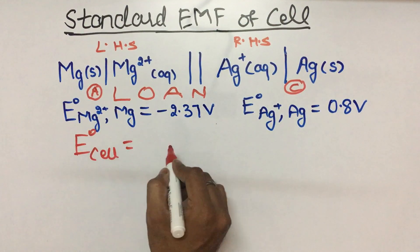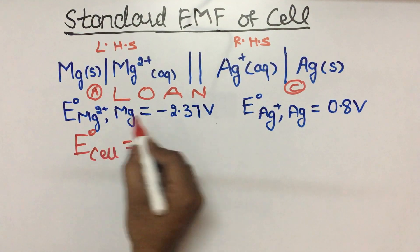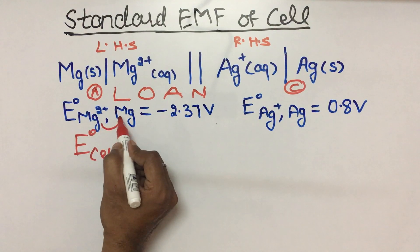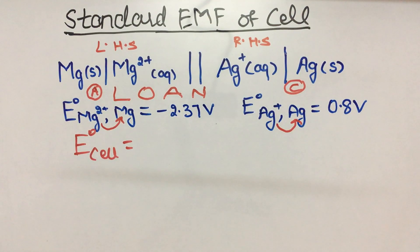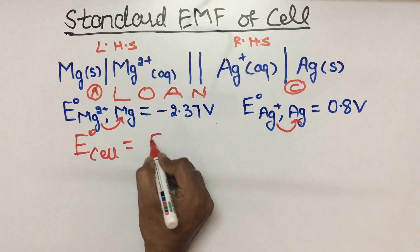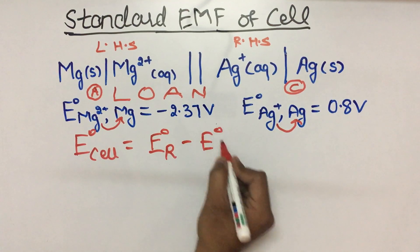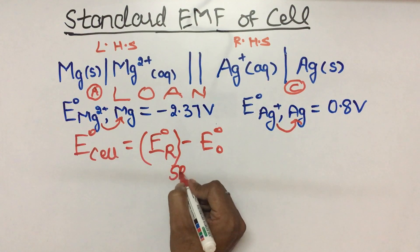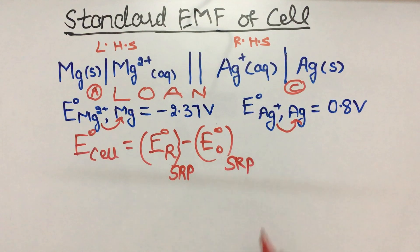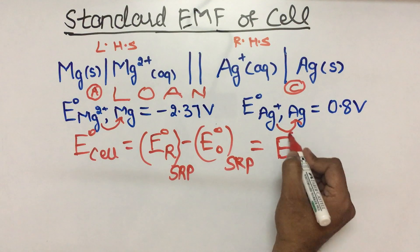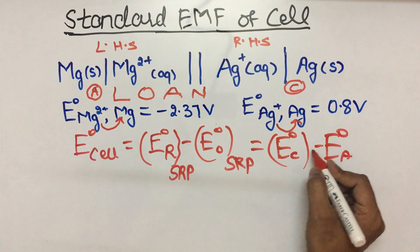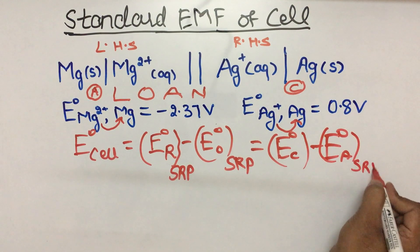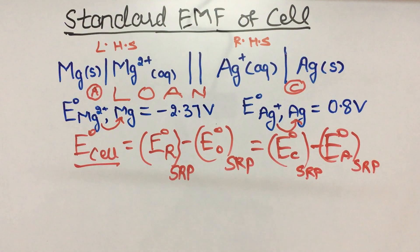So you can use the formula: E0 cell is equal to E0 reduction minus E0 oxidation. But in both cases we take standard reduction potential values. This formula can also be written as E0 cell = E0 cathode minus E0 anode, where both values are standard reduction potentials. So the formula is: E0 cell = standard reduction potential of cathode minus standard reduction potential of anode.